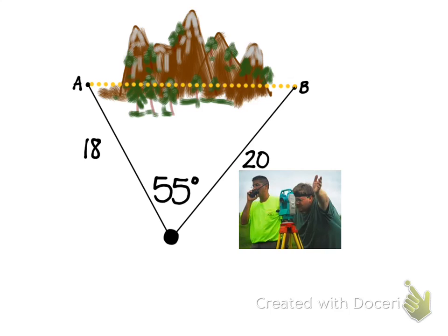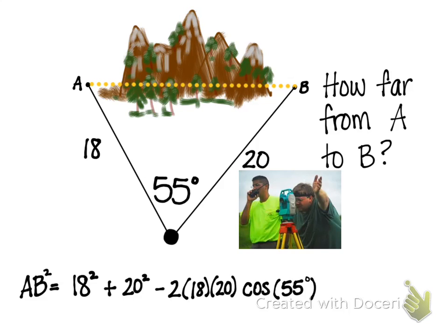What they've got is side, angle, side, and they're trying to find this third side of a triangle, which is exactly lending itself for the law of cosines. So to find the distance from the town of Alice to the town of Baker is to use that law of cosines.